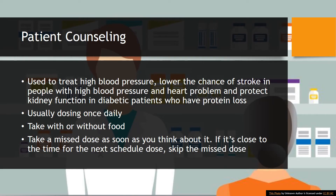So let's begin with patient counseling. Losartan is used to treat high blood pressure. It is also used to lower the risk of stroke in certain people with heart disease, and this medication is also used to slow long-term kidney damage in people with type 2 diabetes who also have high blood pressure.